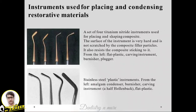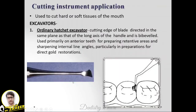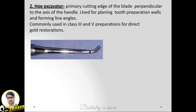Stainless steel plastic instruments include an amalgam condenser, burnisher, carving instrument, and flat plastic instrument. Cutting instruments include excavators: the ordinary hatchet excavator has its cutting edge directed in the same plane as the long axis of the handle, used primarily on anterior teeth for preparing retentive areas and sharpening internal line angles for gold restorations. The hoe excavator has its cutting edge perpendicular to the axis, used for tooth preparation walls and forming line angles, commonly in Class 3 and Class 5 preparations.